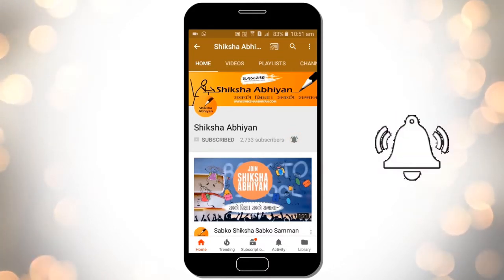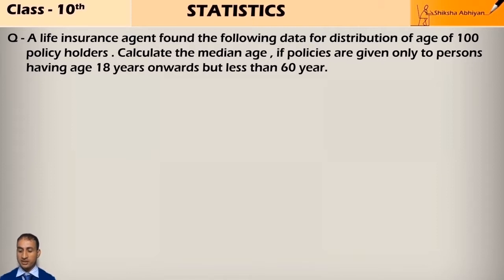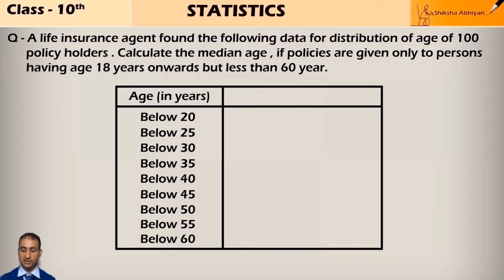A life insurance agent found the following data for the distribution of ages of 100 policyholders. Calculate the median age if policies are given only to persons having age 18 years onwards but less than 60 years. The data is age in years, number of policyholders.